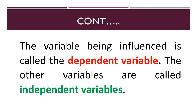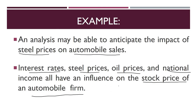In regression analysis we have two types of variables: the dependent variable and the independent variable. The variable which is being influenced is called the dependent variable, and the other variables are called the independent variables. For example, if we are seeing the impact of steel price on automobile sales, automobile sales is the dependent variable because sales depends on the price of steel, and steel price is the independent variable.